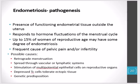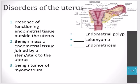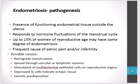Endometriosis is the presence of functioning endometrial tissue outside of the uterus that responds to hormonal fluctuations of the menstrual cycle. When progesterone levels drop, the ectopic endometrial tissue sheds blood — essentially menstruating in areas other than the uterus. Since that blood has nowhere to exit the body, it builds up and can cause considerable pain.